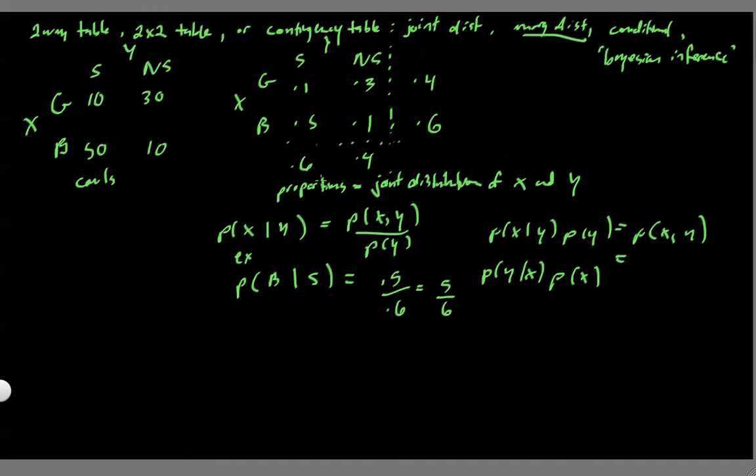So suppose we pick a person and note that it is a boy. Now, what is the probability that they're a smoker? So what is the probability of being a smoker given that we've selected a boy? Well, this is going to be equal to the probability that they're a boy given that they smoke times the total probability of smoking divided by the total probability of being a boy.